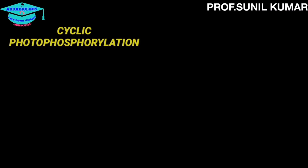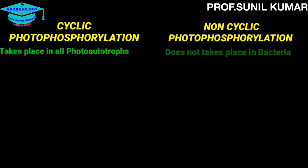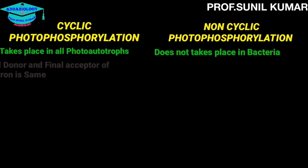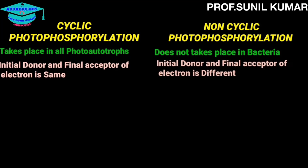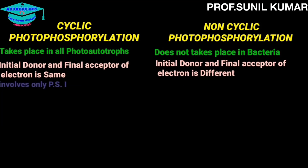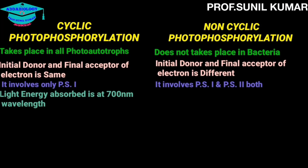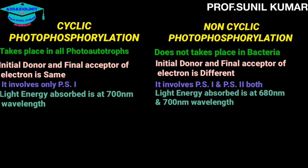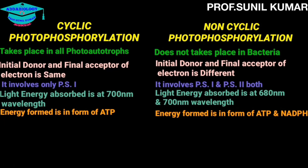Now let's distinguish between cyclic and non-cyclic photophosphorylation. Cyclic takes place in all photoautotrophs; non-cyclic does not take place in bacteria. In cyclic, the initial donor and final acceptor of the electron are the same; in non-cyclic, they are different. Cyclic involves only photosystem one; non-cyclic involves both photosystem one and photosystem two. Cyclic absorbs light at 700 nm; non-cyclic uses 680 nm and 700 nm. Cyclic produces only ATP; non-cyclic produces both ATP and NADPH2.